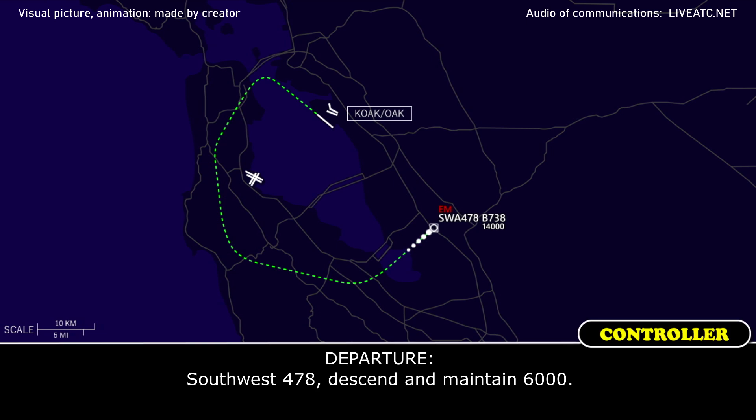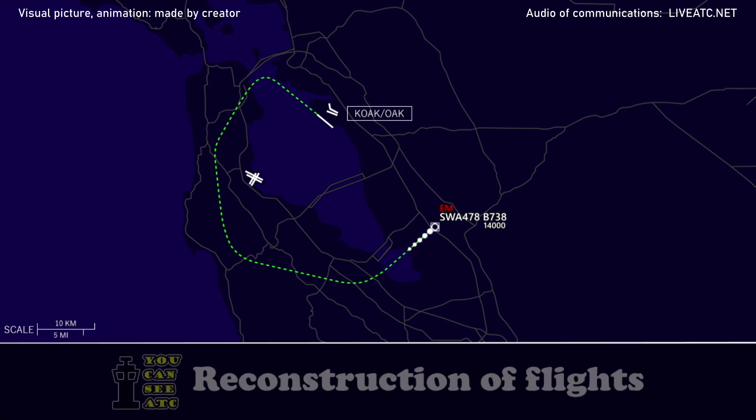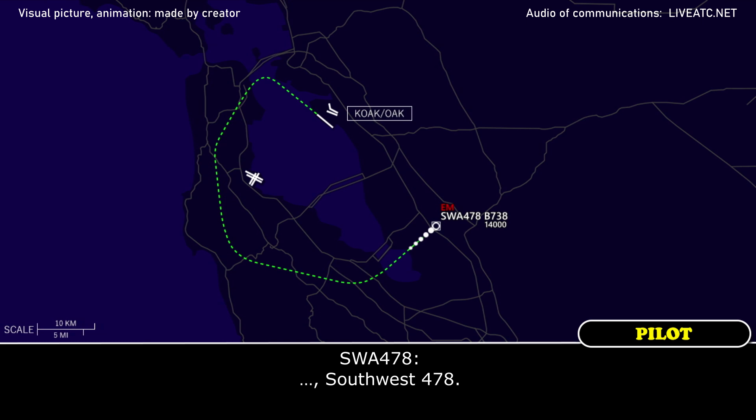ATC: Southbound 478, descend and maintain 6,000. Southbound 478: Descend to 6,000, southbound 478.